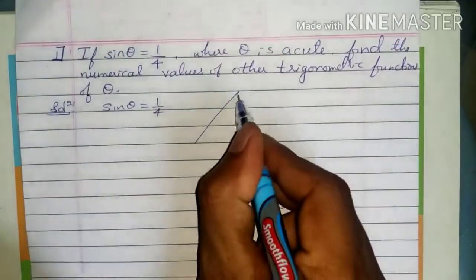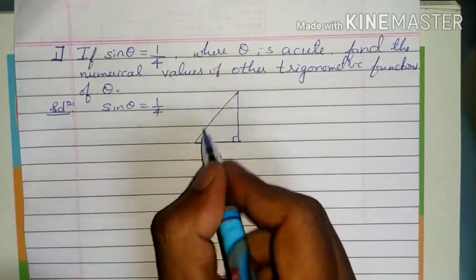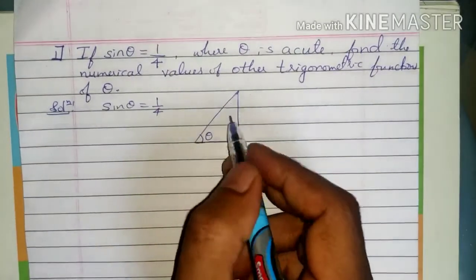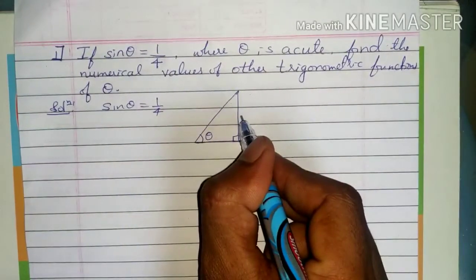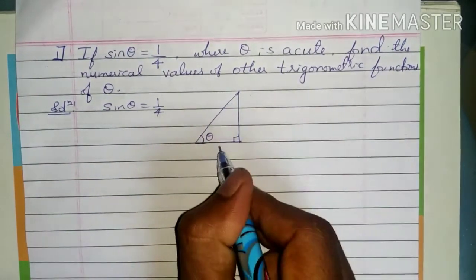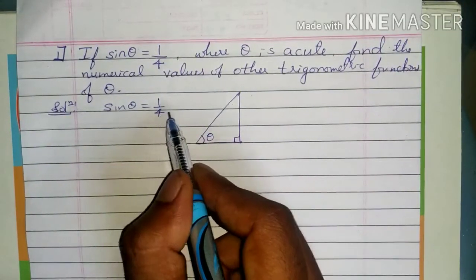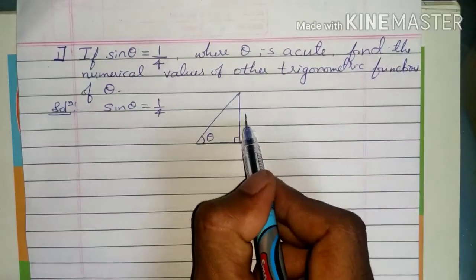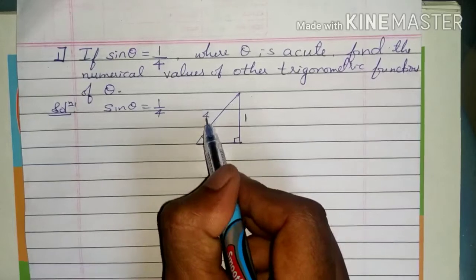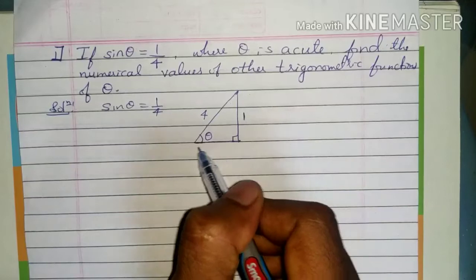Whenever you find these types of problems, first draw a right angle triangle and mark theta somewhere — not at the 90-degree angle. With respect to theta, this is the opposite side, this is the hypotenuse, and this is the adjacent side. Sin theta is defined as opposite by hypotenuse, so in the place of opposite we write 1, and hypotenuse is 4, giving sin theta equals 1 by 4.